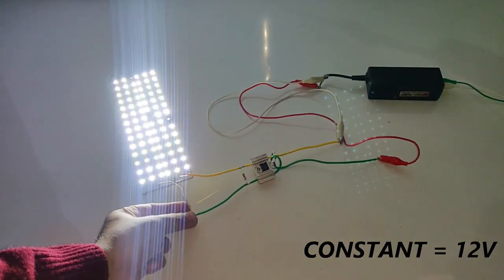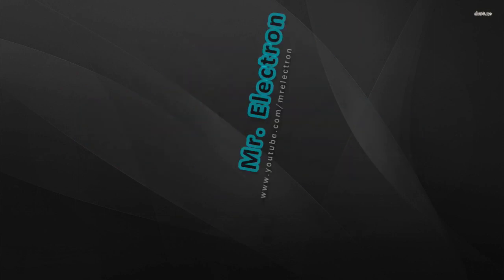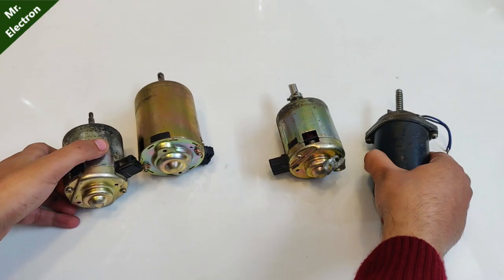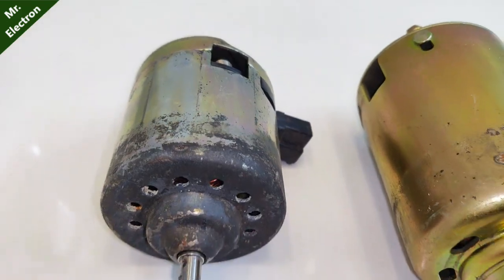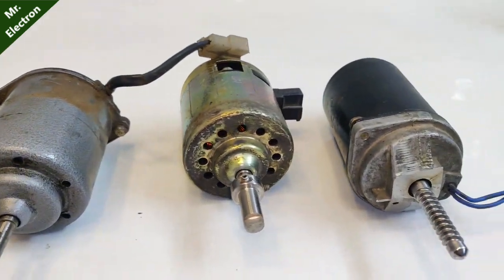All the lights have been turned off and you can see that it is glowing really bright. Hi guys, you are watching channel Mr. Electron and these what you see are a few 12 volt DC motors.